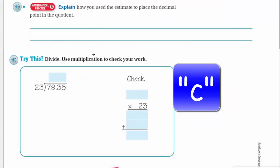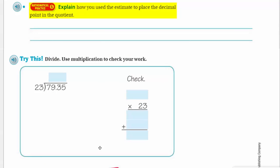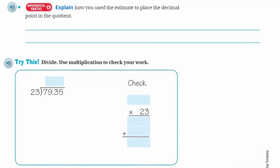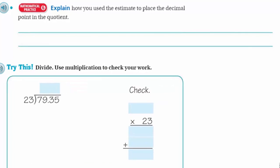Now back to the program. It says explain how you use the estimate to place the decimal point in the quotient. Well, we kind of briefly mentioned it. I think I already stated it. But since the estimate was 80 cents, I know the decimal has to be placed to the left of the eight in the quotient.